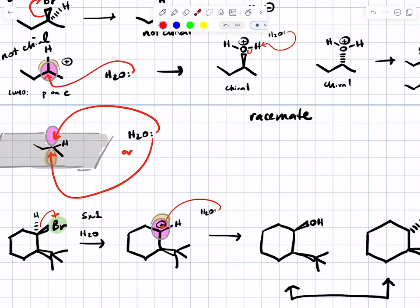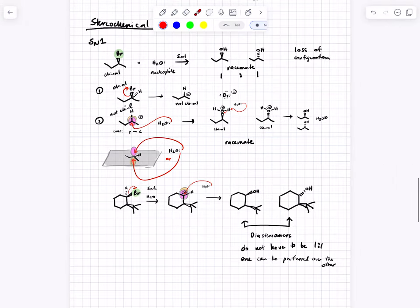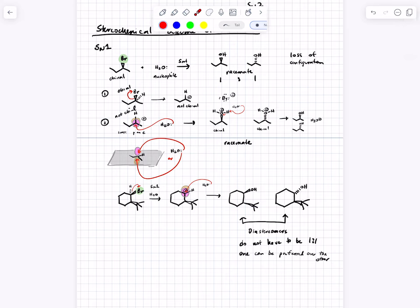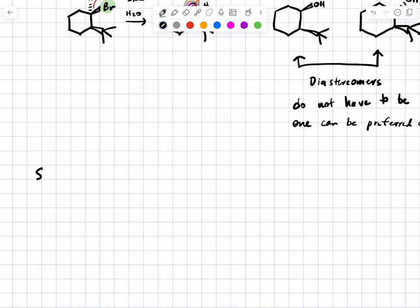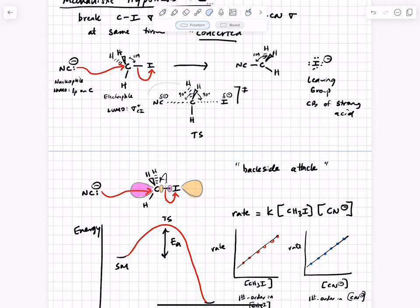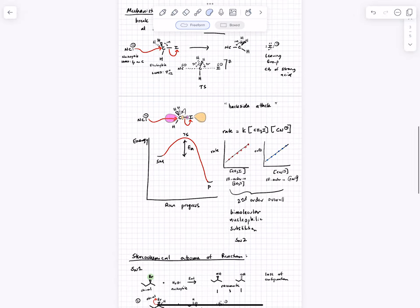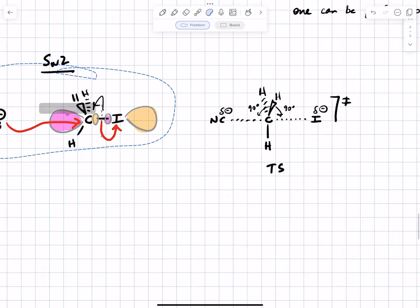Loss of configuration at a stereocenter is evidence for SN1. Even if those two products were not formed in one-to-one ratio, the fact that you started with 100% of one configuration but get a mixture of products is evidence for a carbocationic intermediate. Now let's do SN2 and see how that contrasts. For SN2, we don't have a non-chiral intermediate — we don't have a carbocation. We have a transition state, and we know that the nucleophile has to come in from the backside.